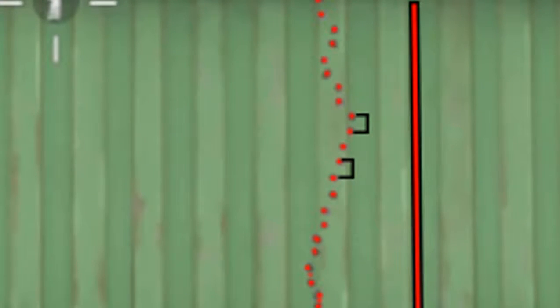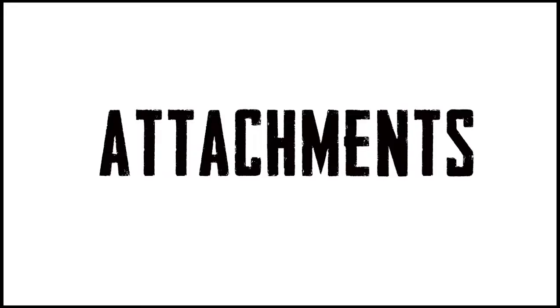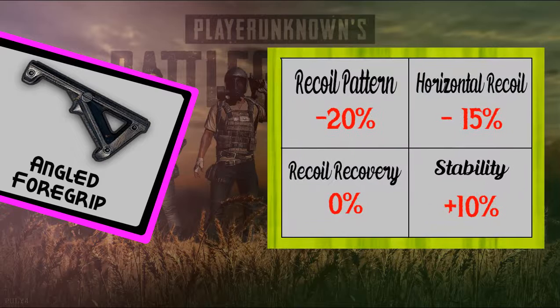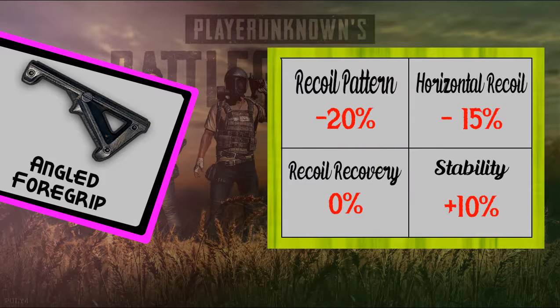Now let's see which attachment impacts which recoil part. The angled foregrip reduces recoil pattern by minus 20%, meaning the consistent 8 to 10 bullets becomes 5 to 6 bullets — but don't worry, it's an adjustment for overall recoil control. It also reduces horizontal recoil by minus 15%, meaning left-right shaking is reduced by 15%.